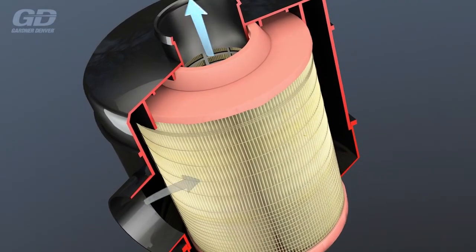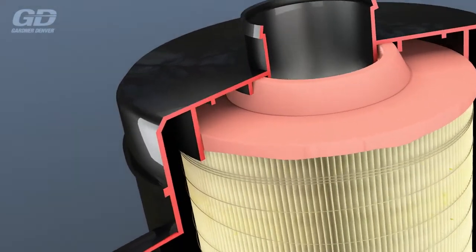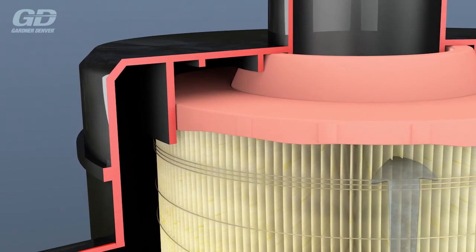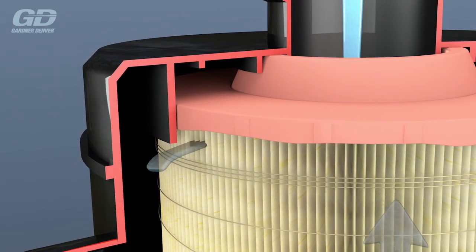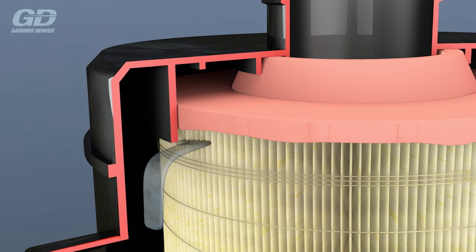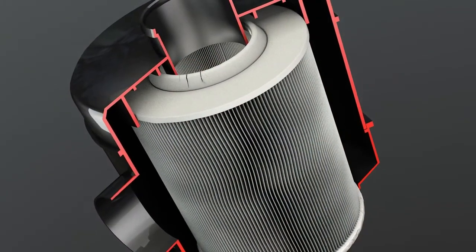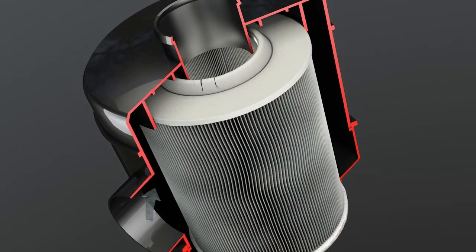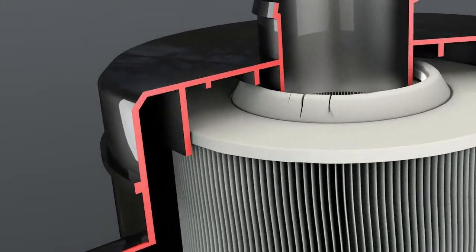Sealing is also an important factor for the reliable operation of the air filter. It prevents the ingress of dirt into the system. Some non-genuine filters can cause more problems than they prevent. Unsuitable seals may result in holes, grooves, or cracks.